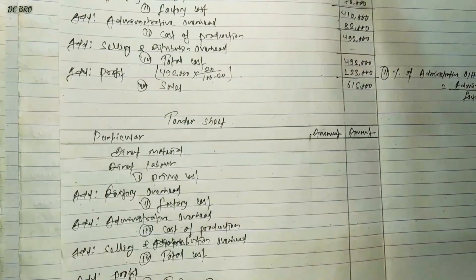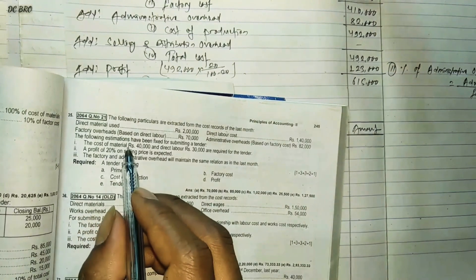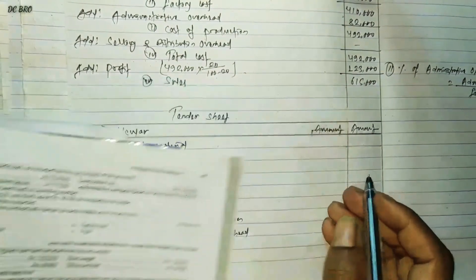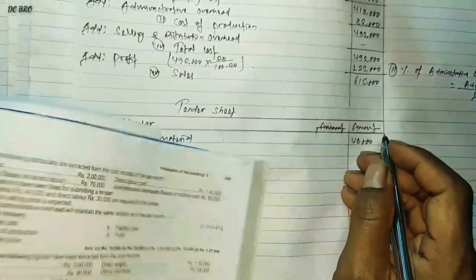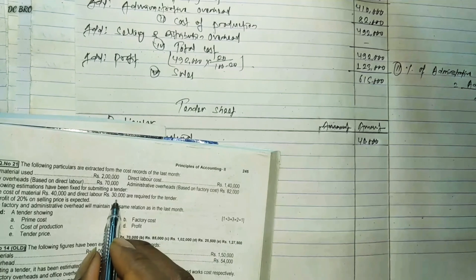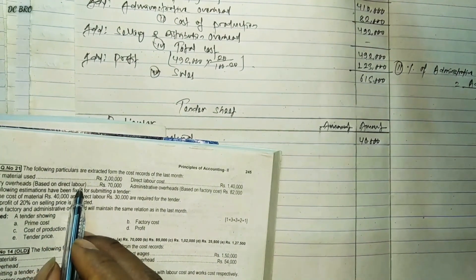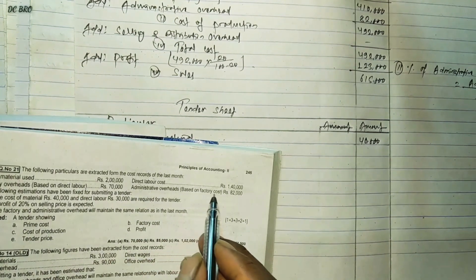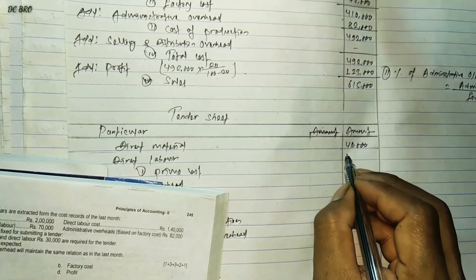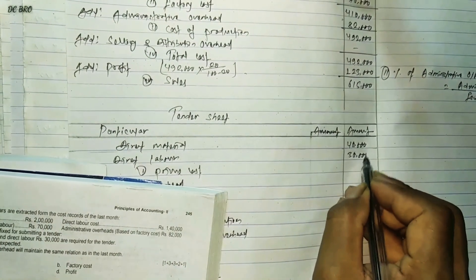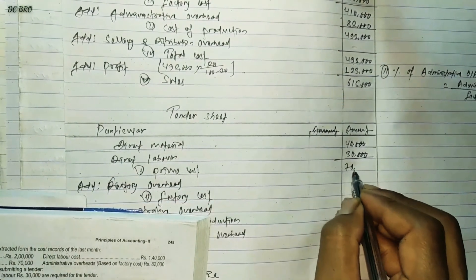From the tender sheet, the amount can be added to the cost of material. Direct material is $40,000. Direct labor is $30,000. Factory overhead is calculated on the basis of direct labor, and factory cost is calculated on the basis of factory cost. Direct labor is $30,000, giving $70,000.